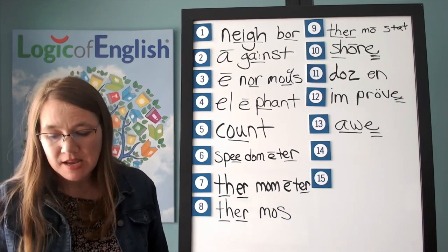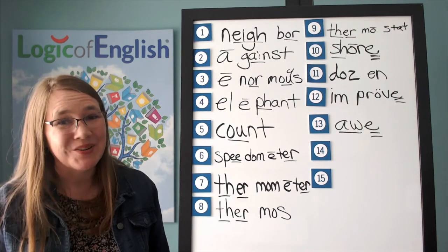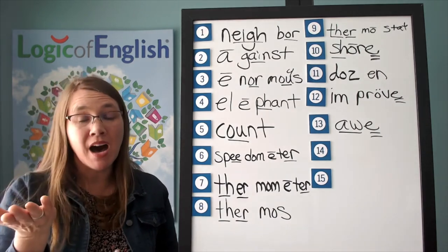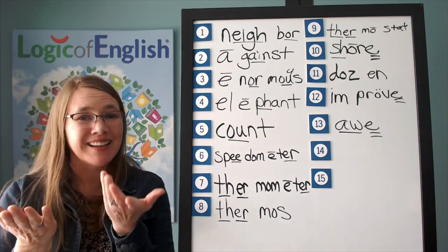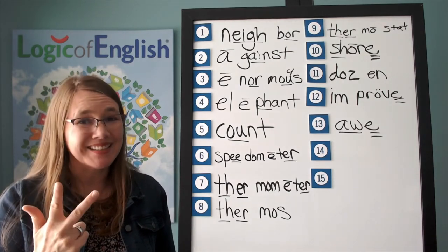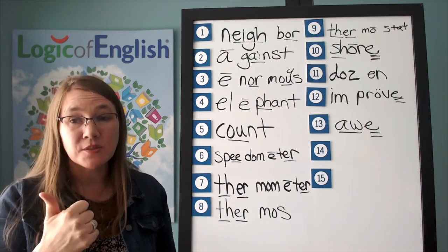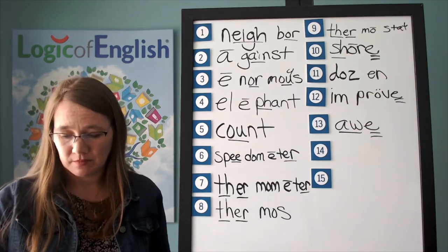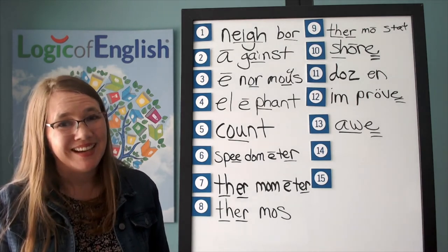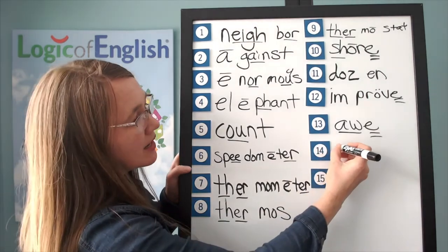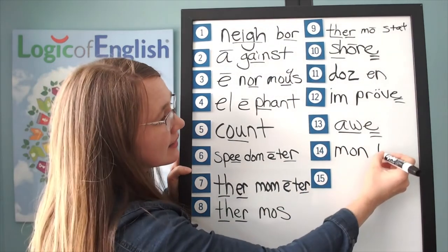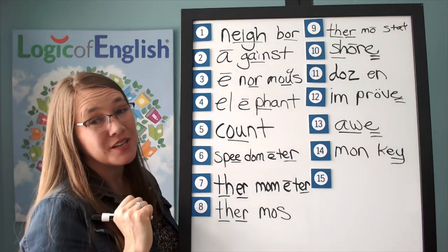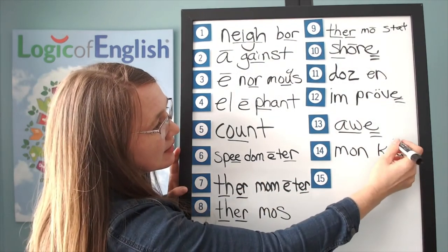The next word is MONKEY. The monkey swung through the tree. Go ahead and say monkey. How many syllables? Two. We will say to spell MONKEY. Let's sound it out: first syllable MON — M, AW, N; second syllable KEY. How will we mark it? Underline the E. What sound of AE do you hear in monkey? The second sound. Put a two over it.